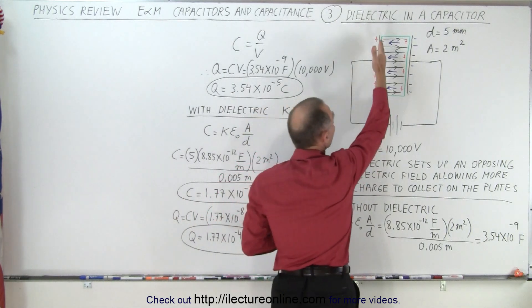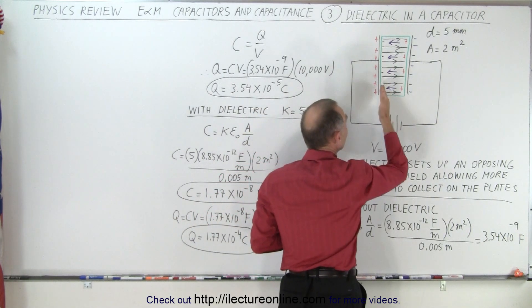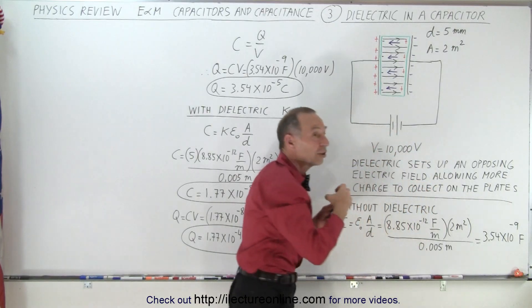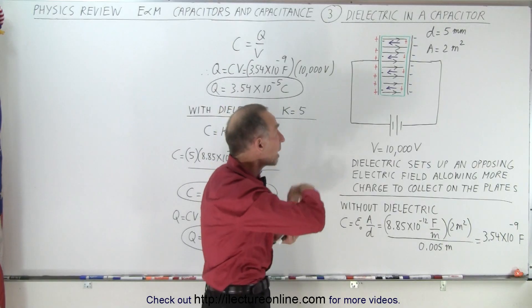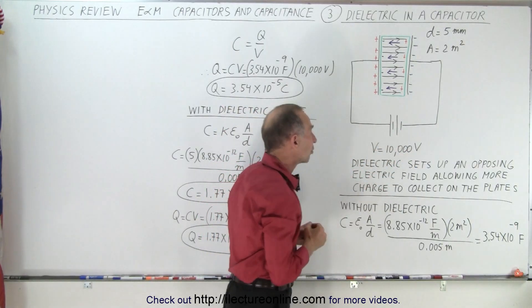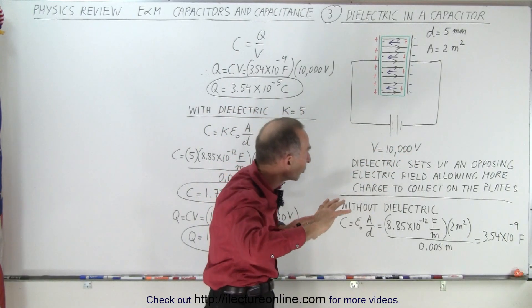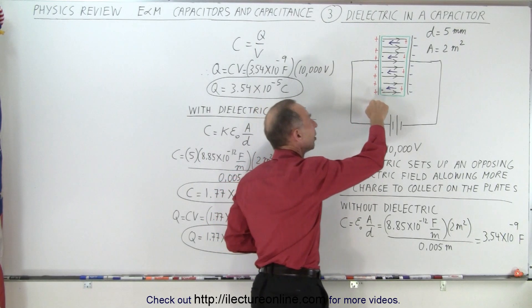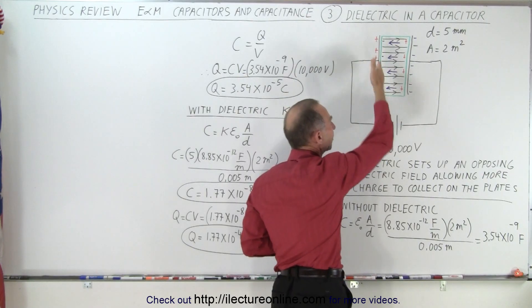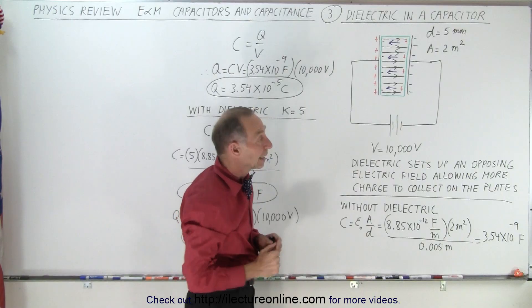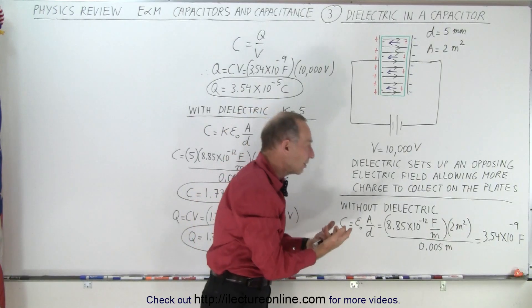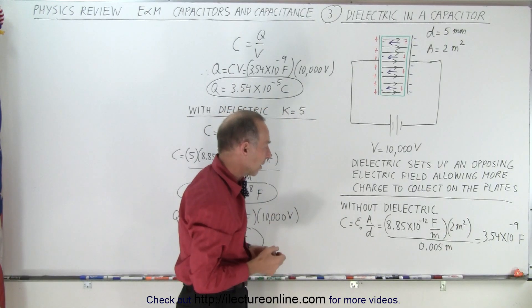But if you create a region right here on the dielectric that is negatively charged, it pulls on the charges and allows more charges to be put on there by that same voltage supply. So the same voltage is now able to push more charges on there because the repulsive forces between the positive charges here are offset by the pull of the negative charges of dielectric. And so the dielectric essentially increases the effectiveness of the capacitor.